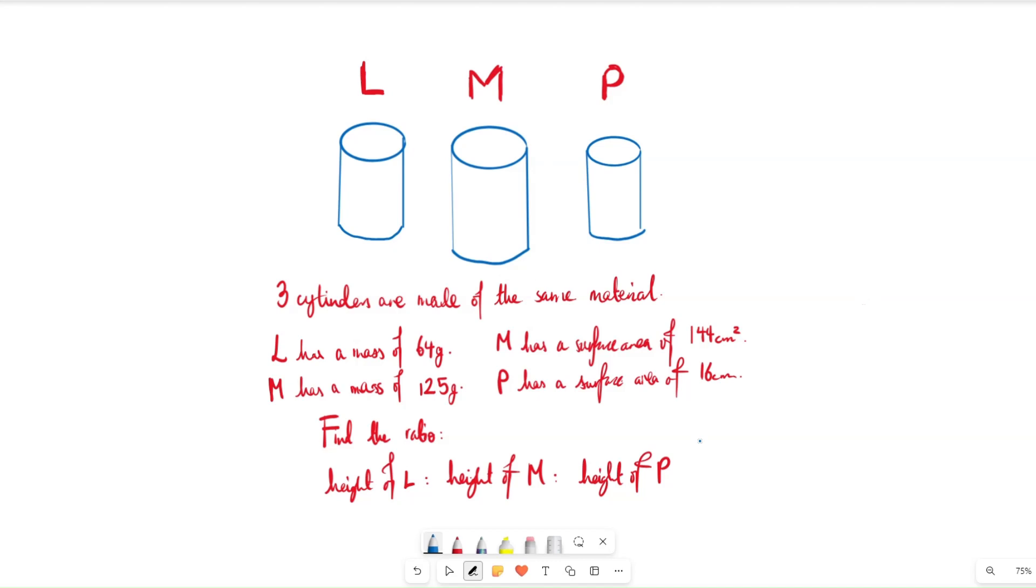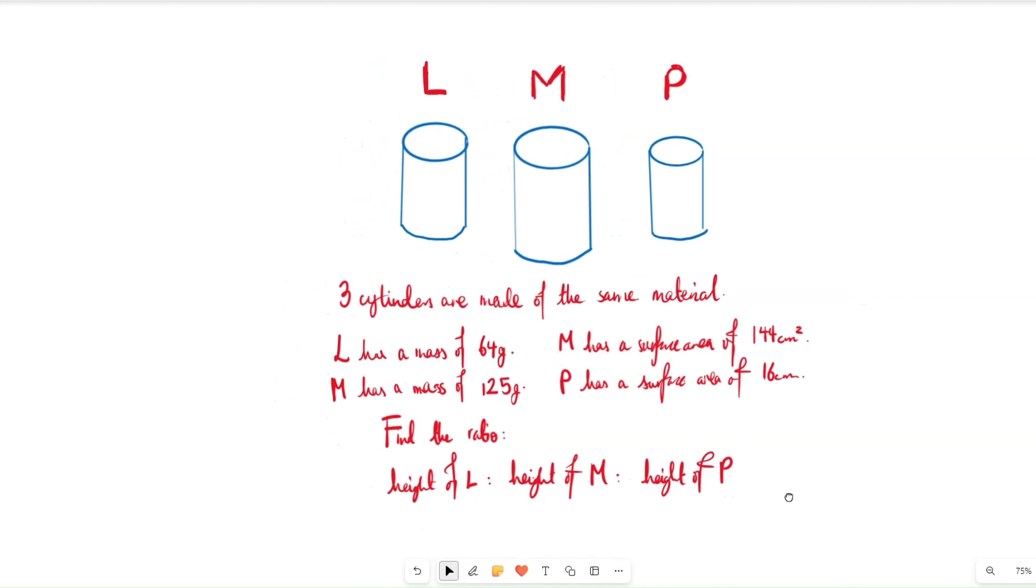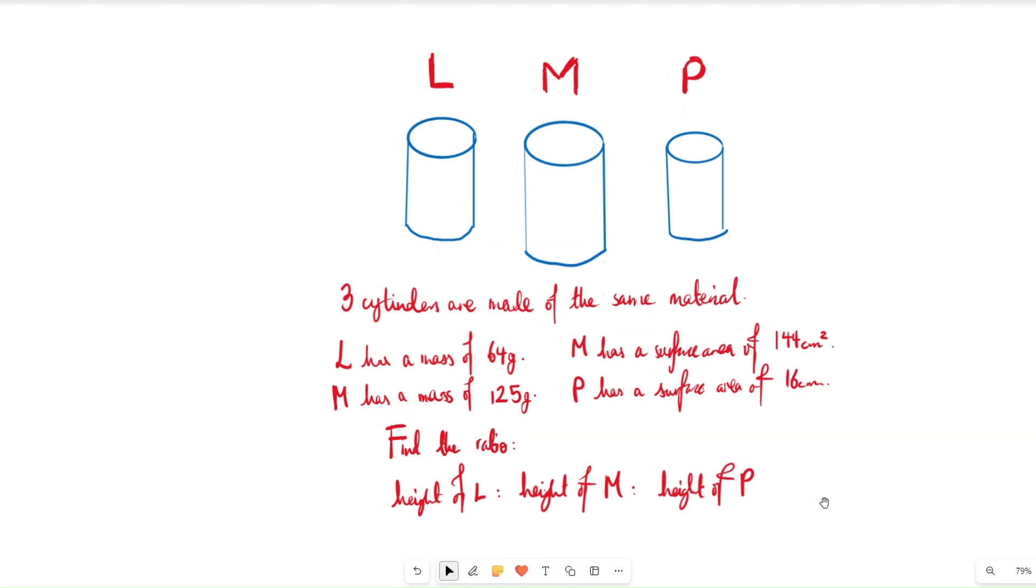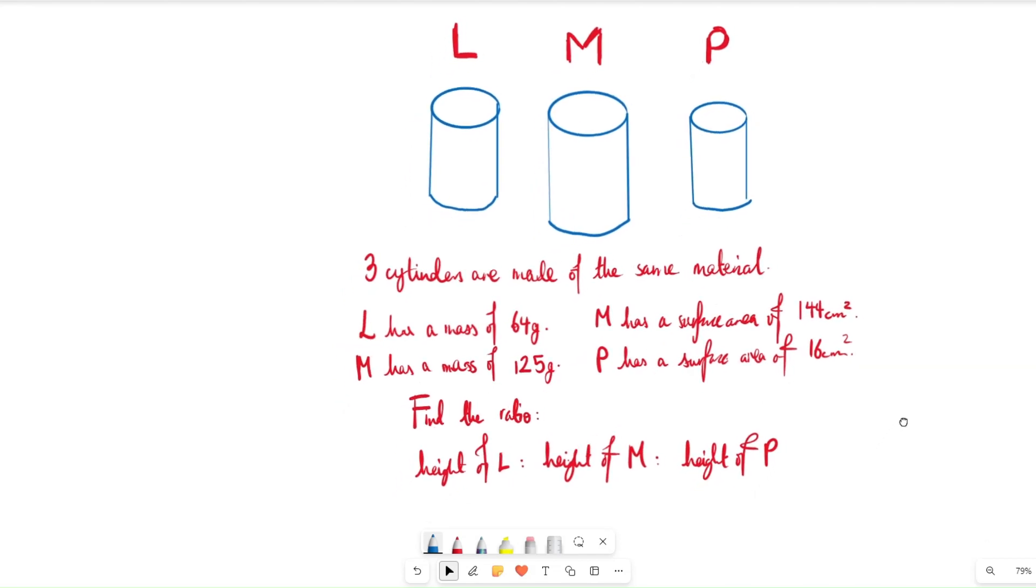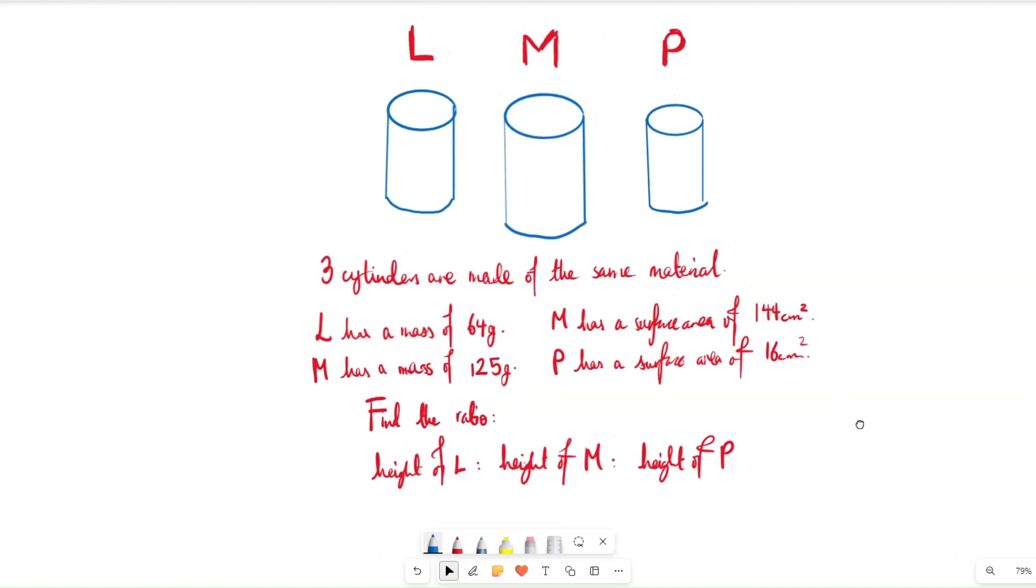We've got three cylinders: L, M, and P, all made of the same material. We're given the masses of cylinders L and M, so L has a mass of 64 grams, M has a mass of 125 grams. We're also given the surface area of M and P, so M has a surface area of 144 cm squared and P has a surface area of 16 cm squared. The question is asking us to find the ratio of the height of L to the height of M to the height of P.